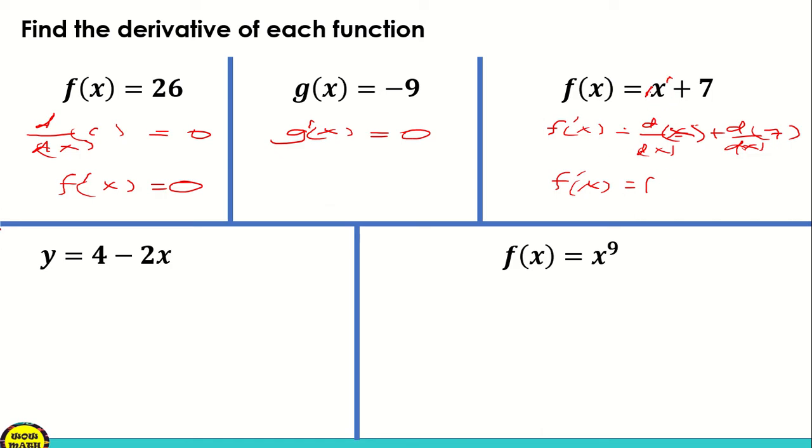Okay, next tayo dito. y is equal to 4 minus 2x. So ganun din, no, pagkukunin natin yung derivative nito, paghiwalayin natin, kunin muna natin yung derivative ng, okay, ng 4 minus yung derivative ng negative 2x.